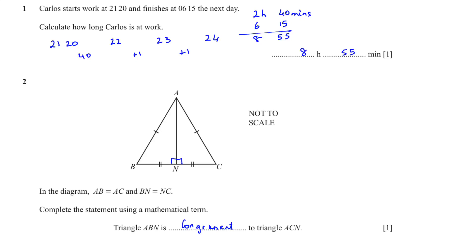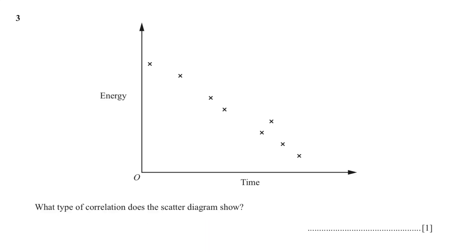If all the angles and all the sides are equal then it is congruent. Question number three: this is a scatter diagram and we need to find the correlation it shows. As it's going downwards, the relationship is negative. There are only three answers for a question like this — negative correlation, positive, or no correlation. If the points go upward it's positive, and if they are scattered randomly there is no correlation.